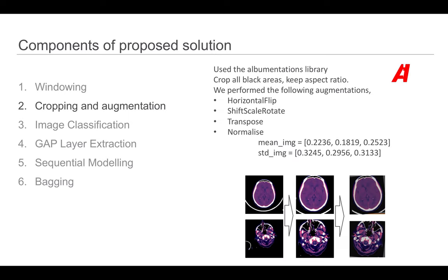We cropped and augmented the images as a regularization technique. We used the albumentations library. First, we cropped all black areas while keeping the aspect ratio of the image. We then used horizontal flip, shift scale rotate, transpose, and normalized the images according to these means and standard deviations.